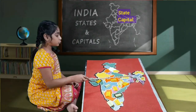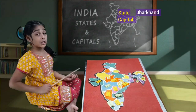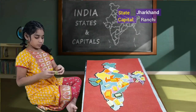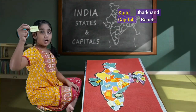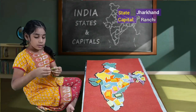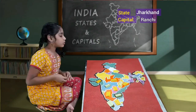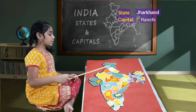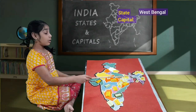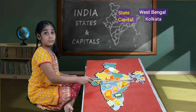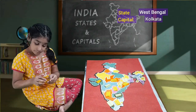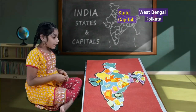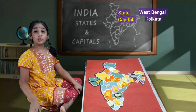Next, we'll move to Jharkhand. Jharkhand's capital is Ranchi. This is Jharkhand. If we open the chat, we'll have Ranchi as capital. And beside Jharkhand, we'll have West Bengal. West Bengal's capital is Kolkata. This is West Bengal. If we open this, we'll have Kolkata. And do you know, West Bengal is famous for Durga Puja.